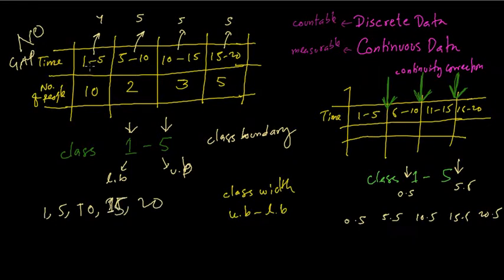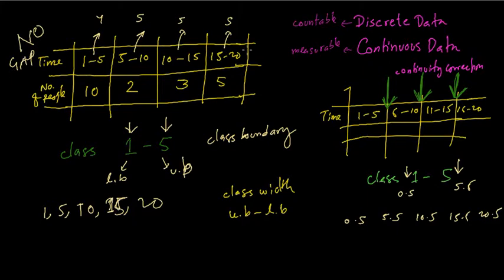It is extremely important to pay attention to whether the data has a gap or no gap. If there is no gap, the data follows continuous data naturally, flowing smoothly. But if it has a gap, we have to do a continuity correction to fill the empty spaces by adding 0.5.